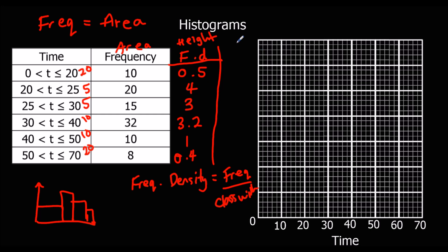We're going to have to draw a scale up the side for our frequency density - we'll just go 1, 2, 3, 4 to make it simple. So the first bar: frequency density, that's the height. The first one is 0 to 20, so it goes from 0 to 20 and it goes up 0.5. So 0.5 is halfway there. Always use a ruler - my freehand isn't that good, so you always use a ruler for these.